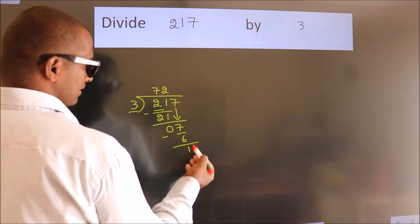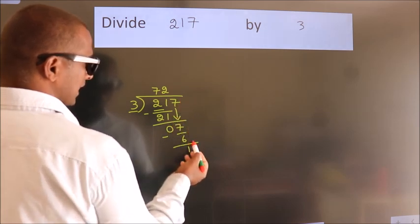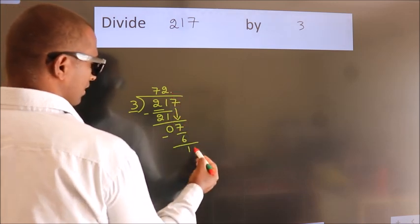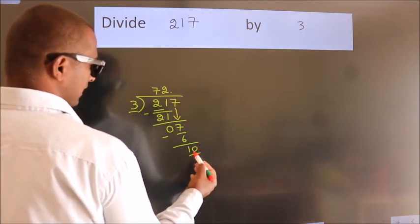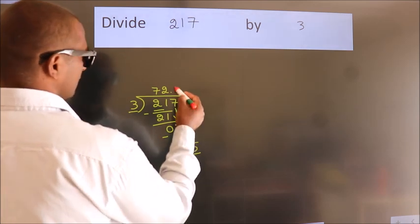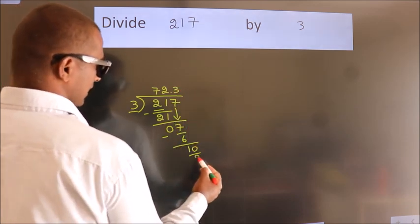After this, no more numbers to bring down. So what we do is, we put a dot and take 0. So 10. A number close to 10 in the 3 table is 3 times 3 is 9.